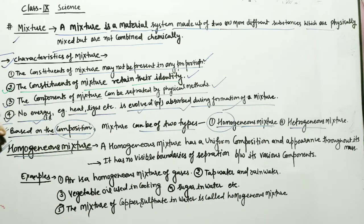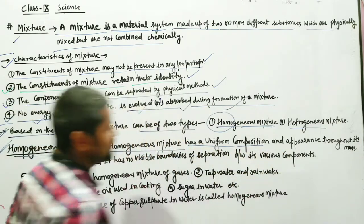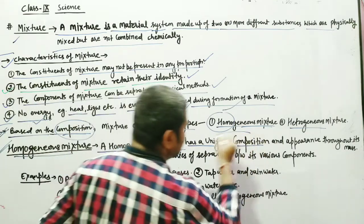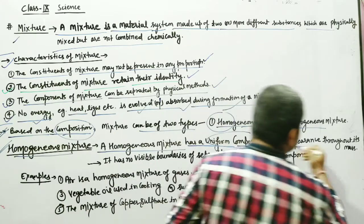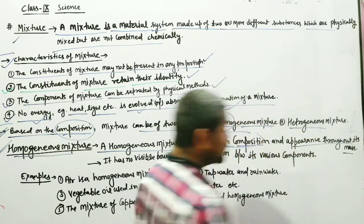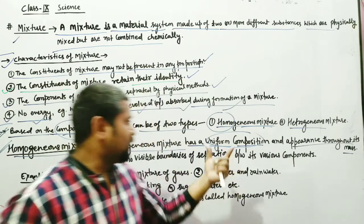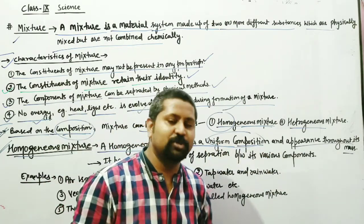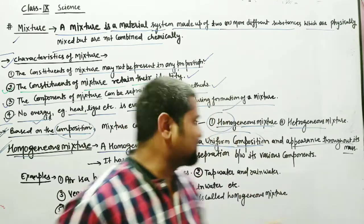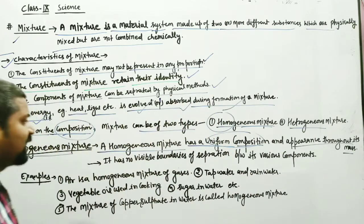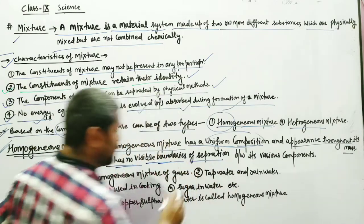What is a homogeneous mixture? A homogeneous mixture has a uniform composition and uniform appearance throughout its mass. It has no visible boundaries between its components — there is no visible boundary separation between the various components.